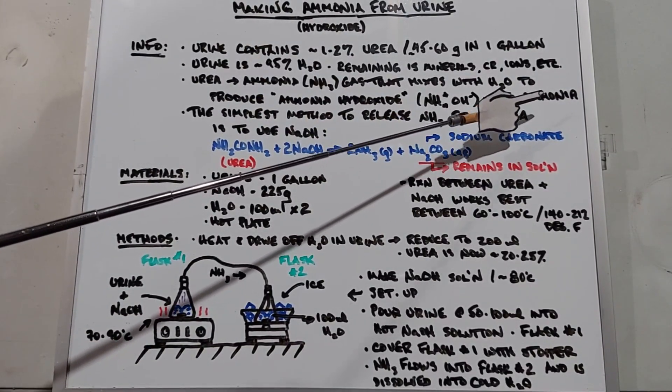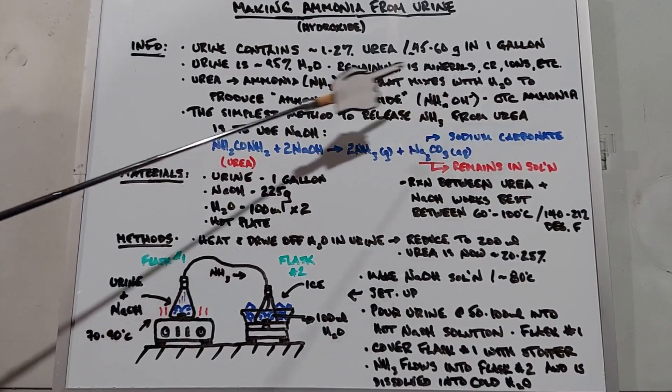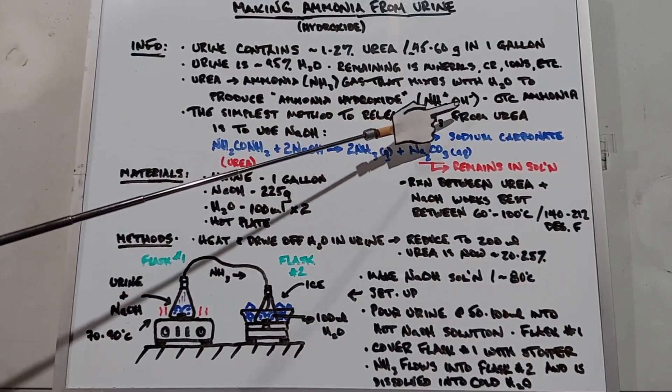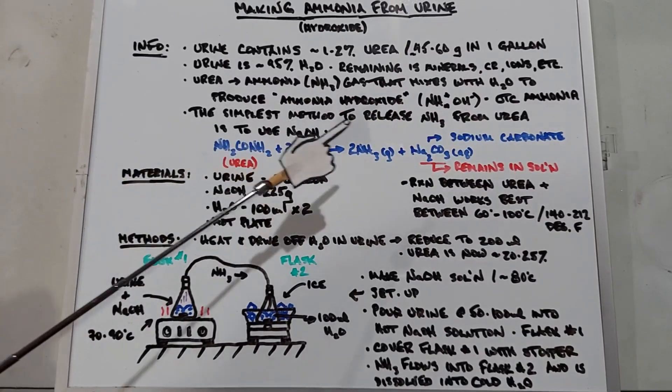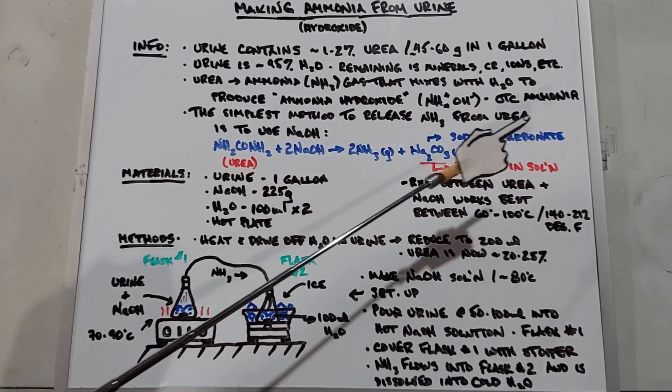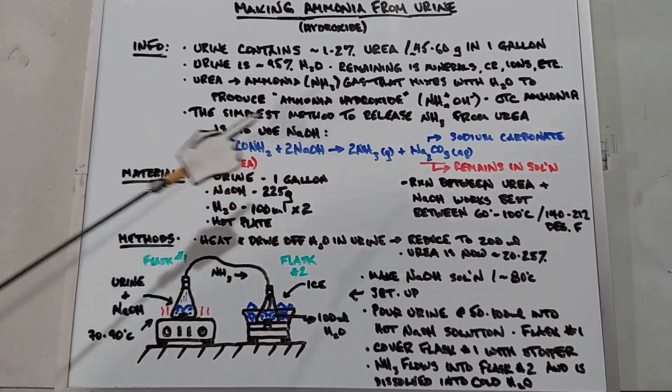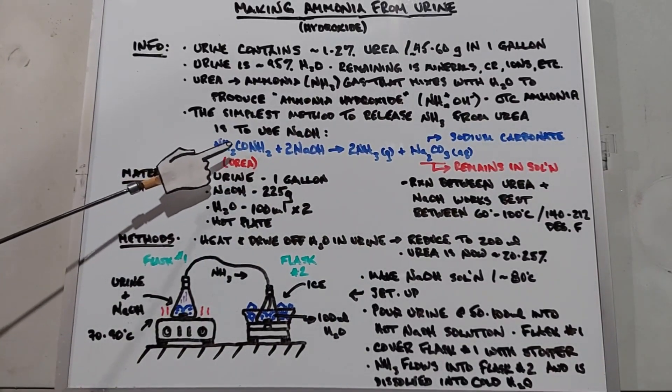This is the same stuff that you buy over the counter. Any ammonia that you buy to clean is really ammonia hydroxide with the formula NH4OH. The simplest method to release ammonia gas from urea is to use sodium hydroxide.